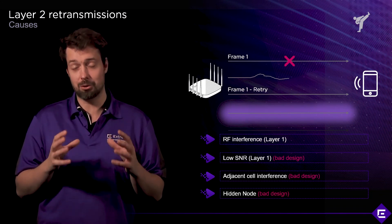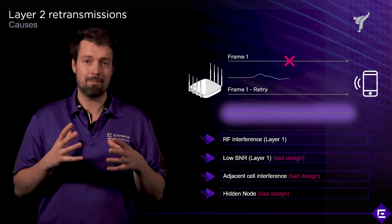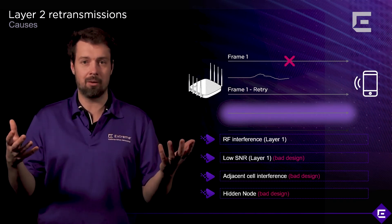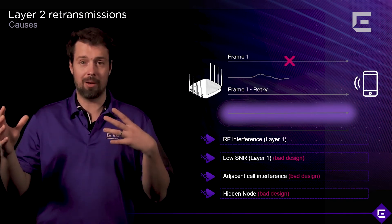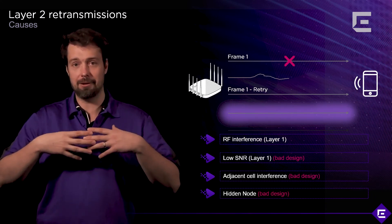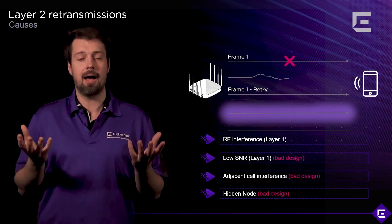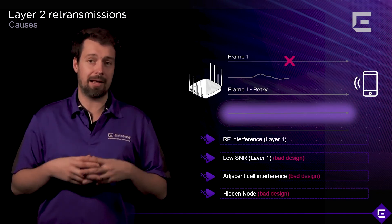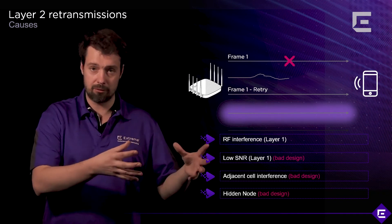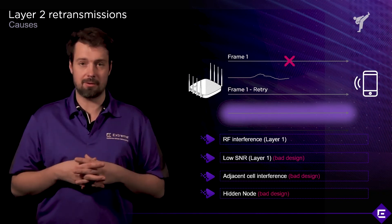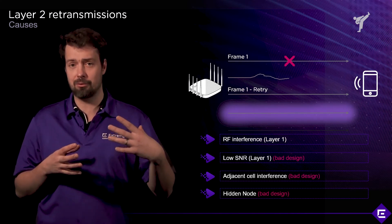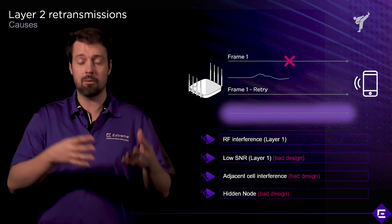Most hidden node scenarios are much more complex and can arise over time. You deploy your Wi-Fi, design it, there's no hidden node — but through time, as the physical environment changes, walls are rearranged, the physical space looks different, those hidden nodes may occur and you may need to revisit your design. You can look at layer two retransmissions to see whether everything is okay, and by exploring how those retransmissions occur, determine whether that's a hidden node or something else.